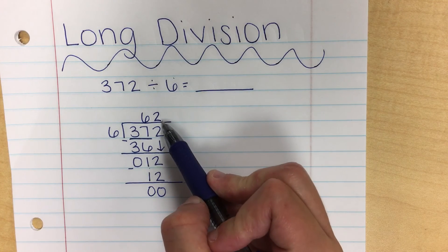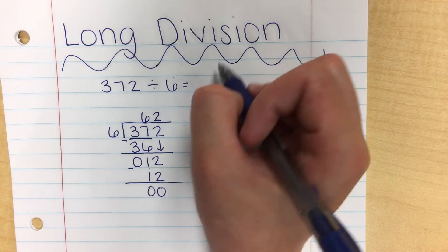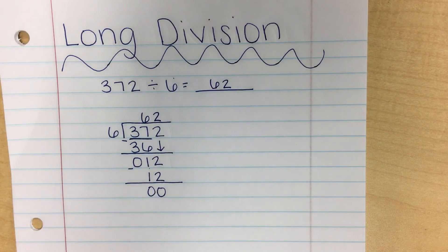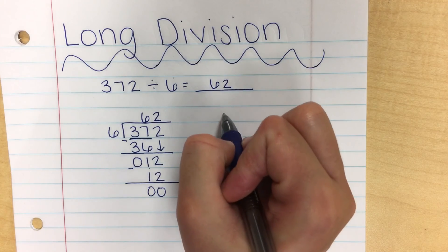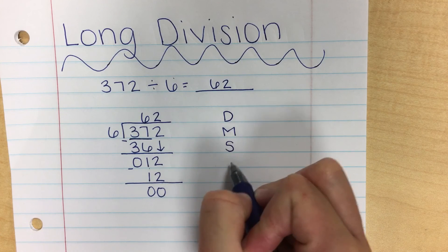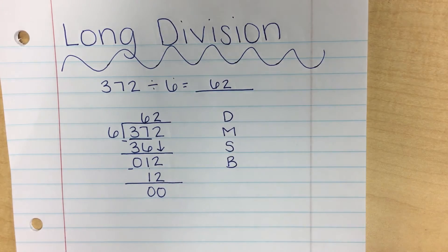And so my answer is the number that's at the top. My answer is 62. Whenever you're doing division, remember the first step is to divide. And then multiply, subtract, and bring down.